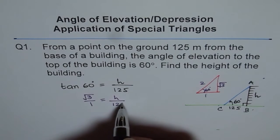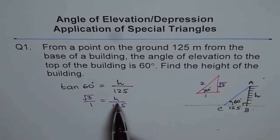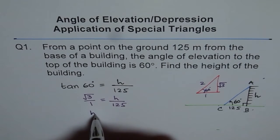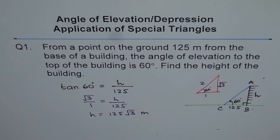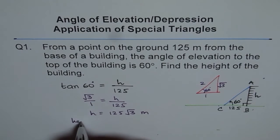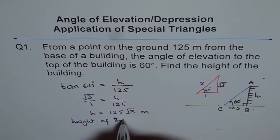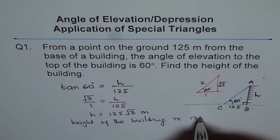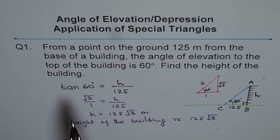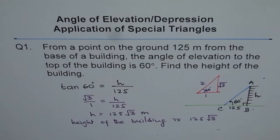Setting √3 equal to height over 125, we cross multiply to get height = 125√3 meters. That is the exact answer. If a problem asks you to round to one decimal place or a whole number, use your calculator and round accordingly.